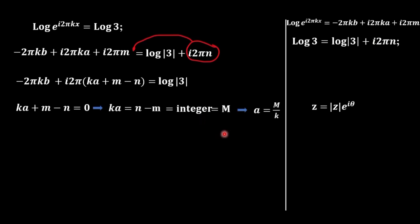Now, we divide over k. And we have the following answer for a. M and k are integers.